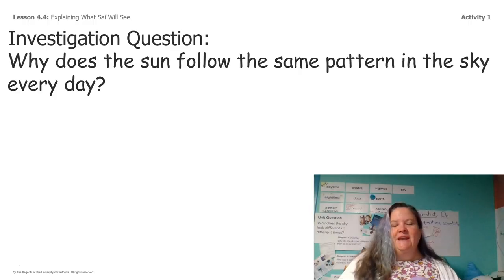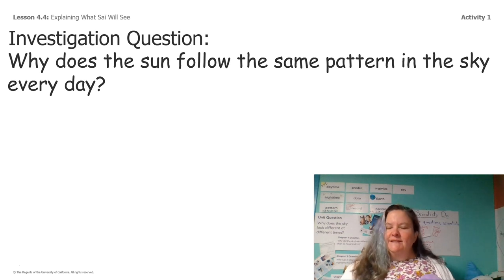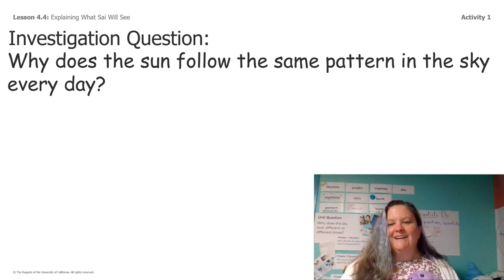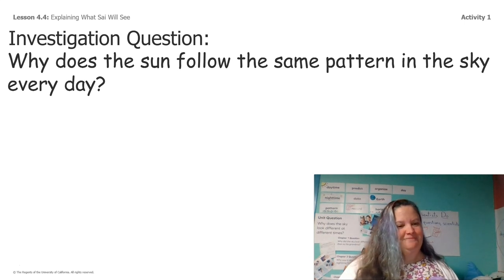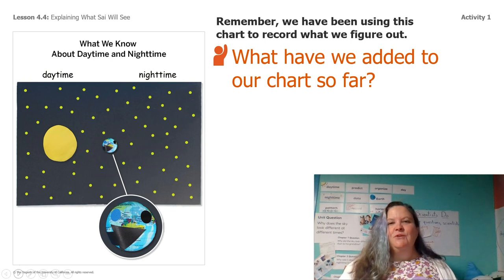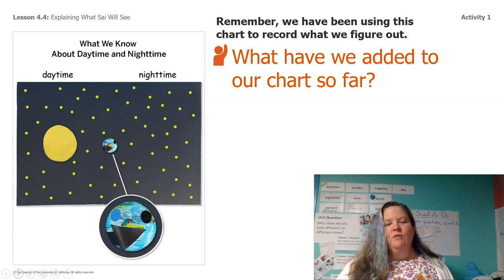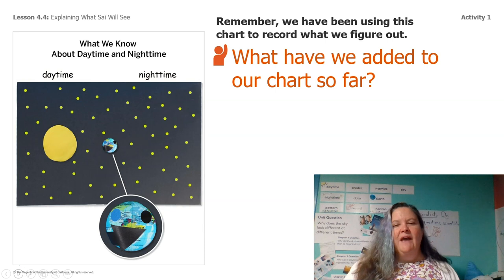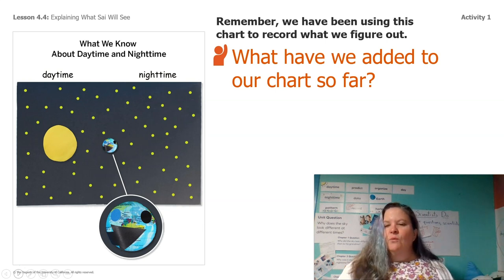We should be able to answer this question by the end of today's lesson: why does the sun follow the same pattern in the sky every day? So we need to think back to this chart. Do you guys remember this chart? We've been using it to record what we've figured out. Can you look at this chart really carefully and point to the screen? What are some of the things we've added to the chart so far, and can you tell me why we added those things? What do you notice?